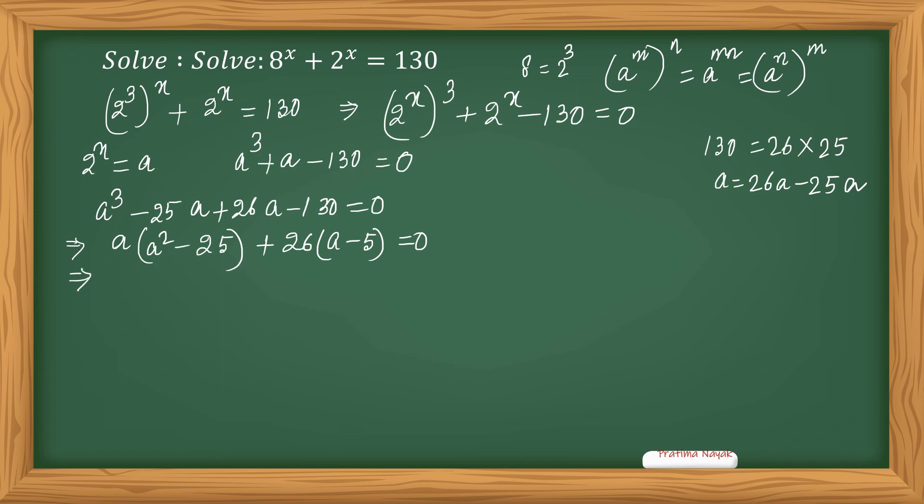Now this a squared minus 25 I can make into (a plus 5) times (a minus 5). So it will be (a minus 5) times (a squared plus 5a plus 26) equals 0, taking (a minus 5) common from both terms.